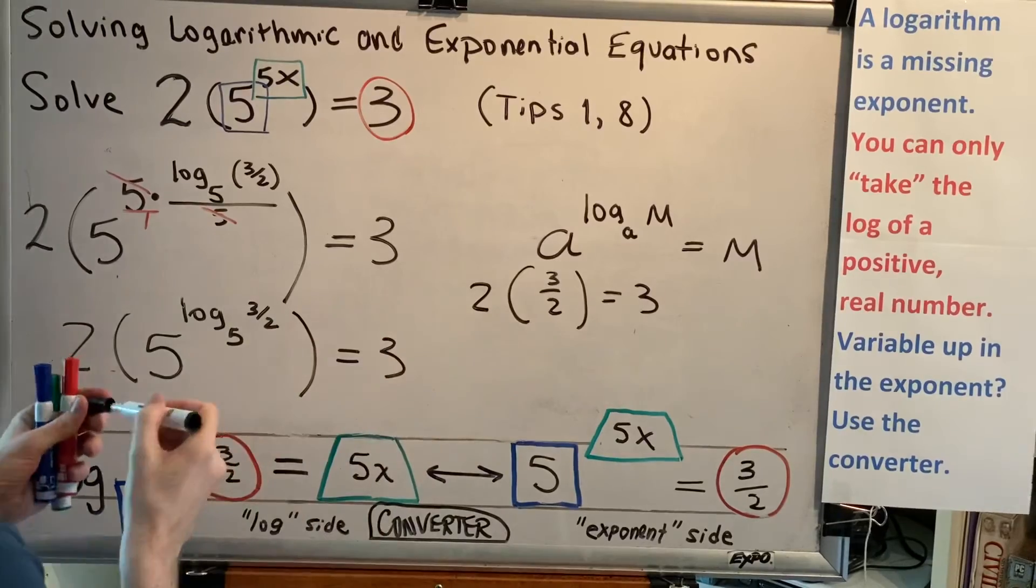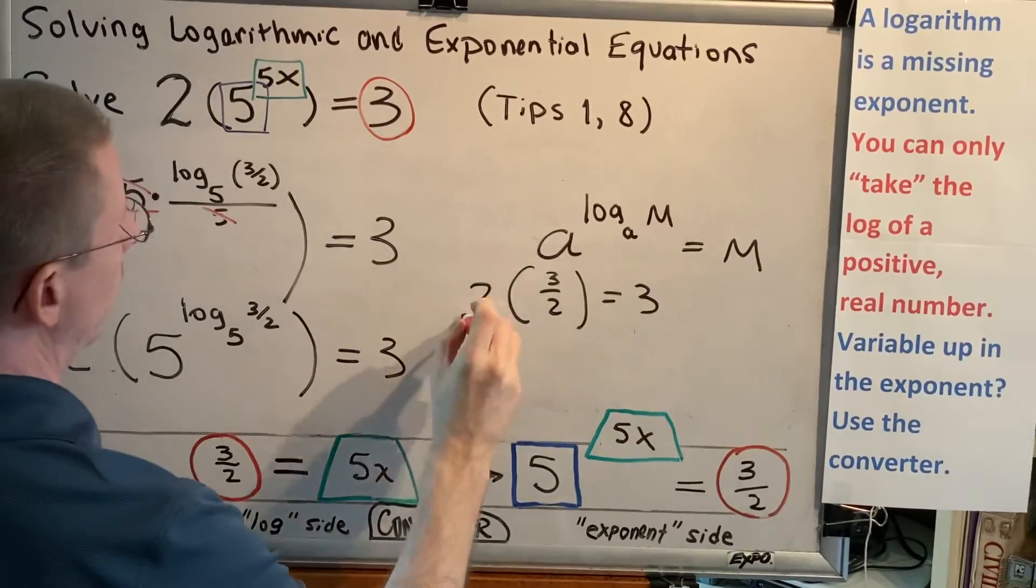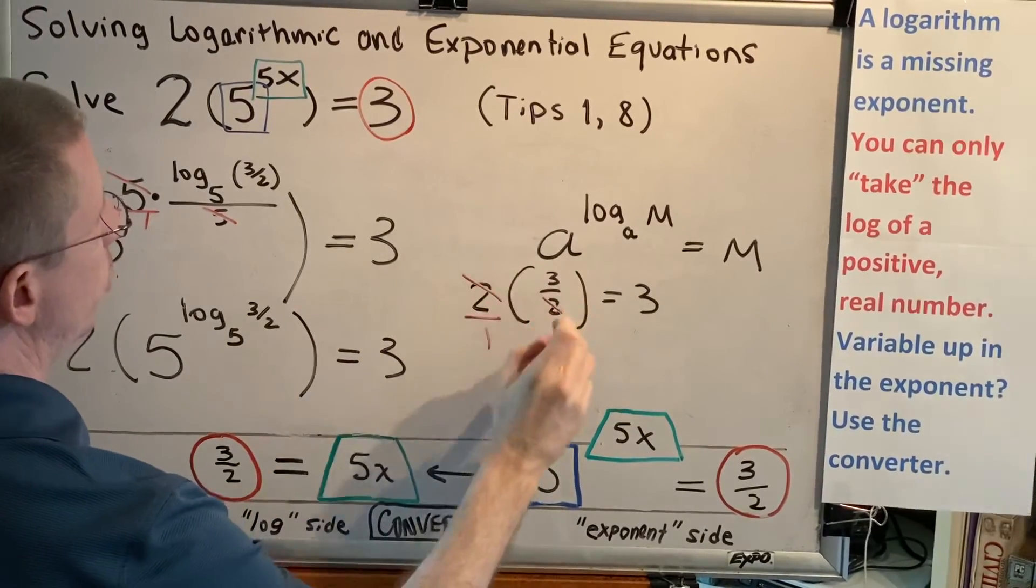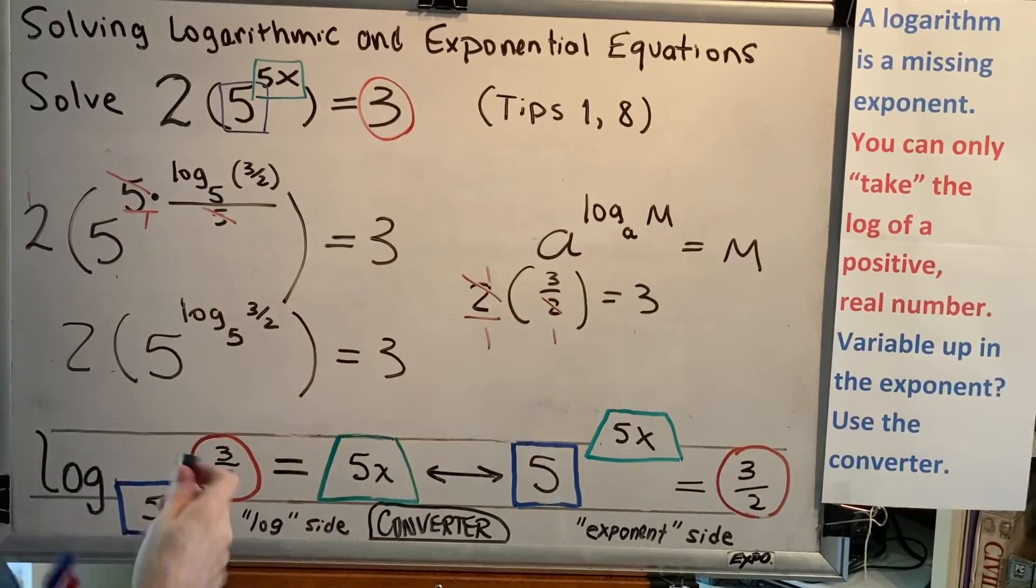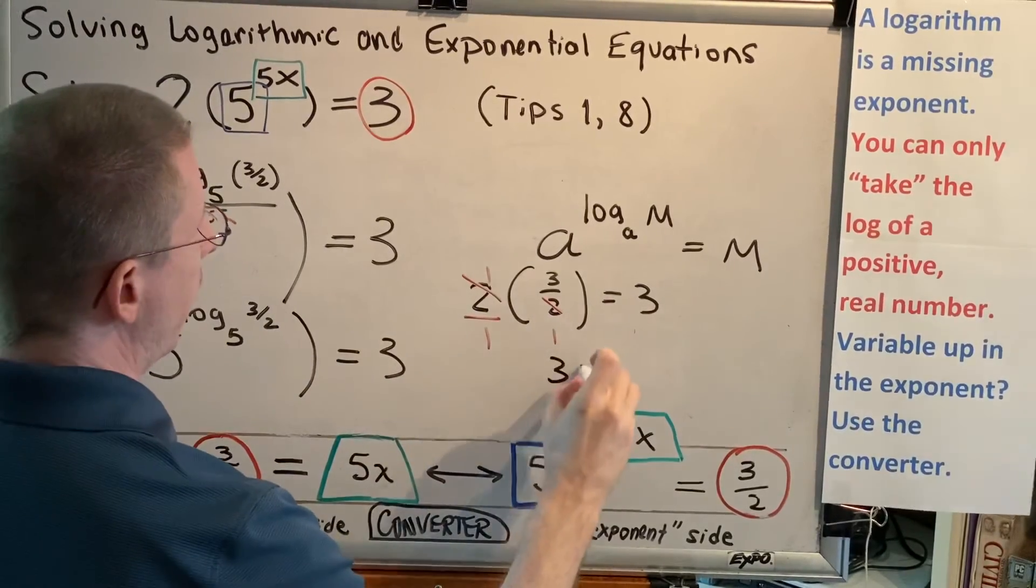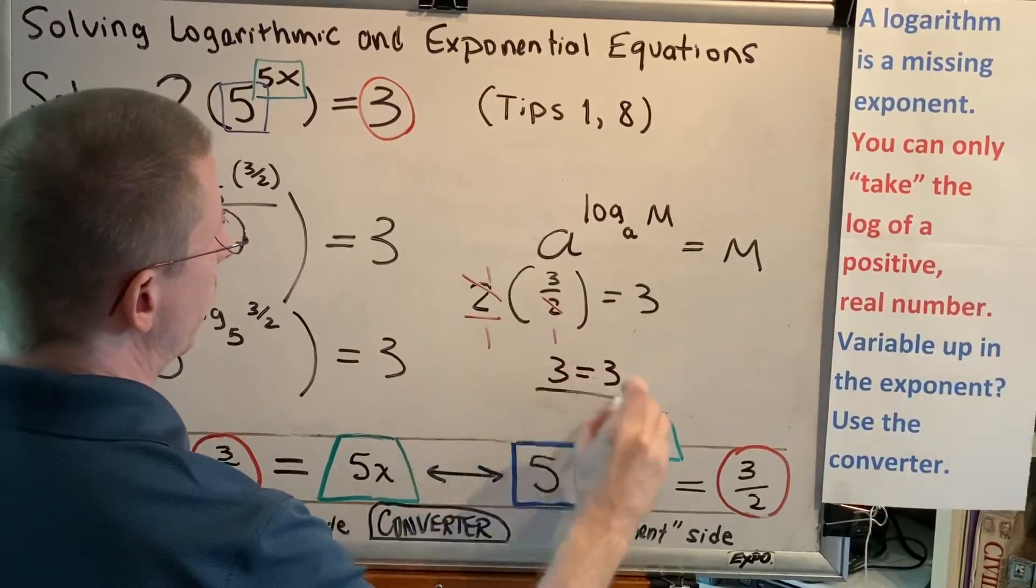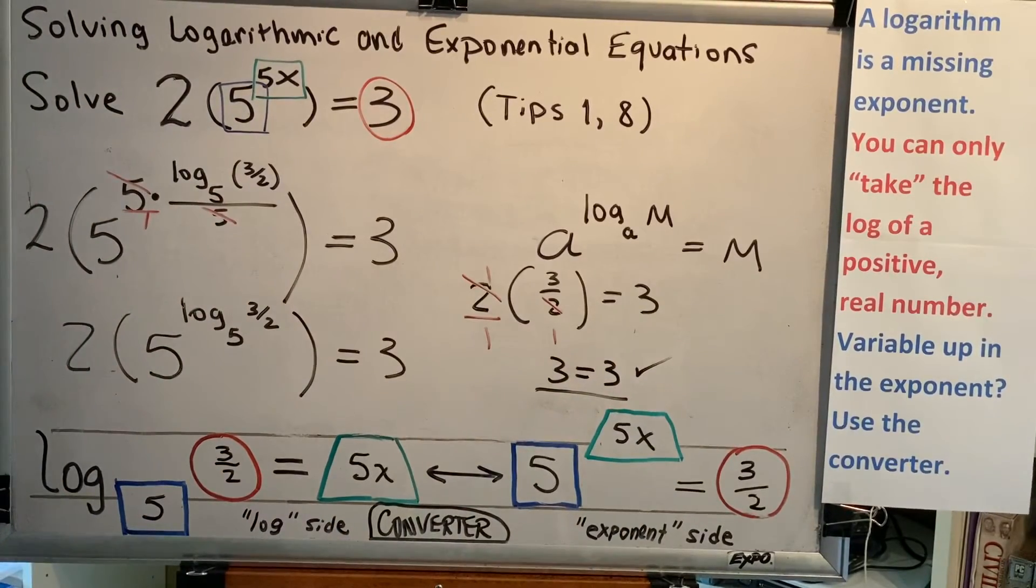And of course, this 2 can be written as 2 over 1, which means this 2 and this 2 cancel to 1. So on the left side, I get 3. On the right side, I get 3. And that proves that the final answer is correct.